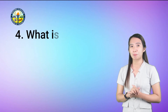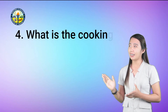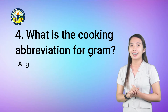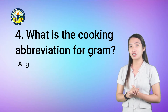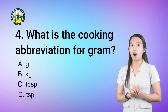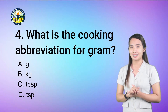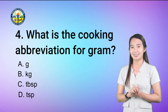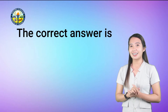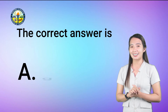Number 4: What is the cooking abbreviation for gram? A. G, B. KG, C. TBSP, or D. TSP. The correct answer is letter A, G.